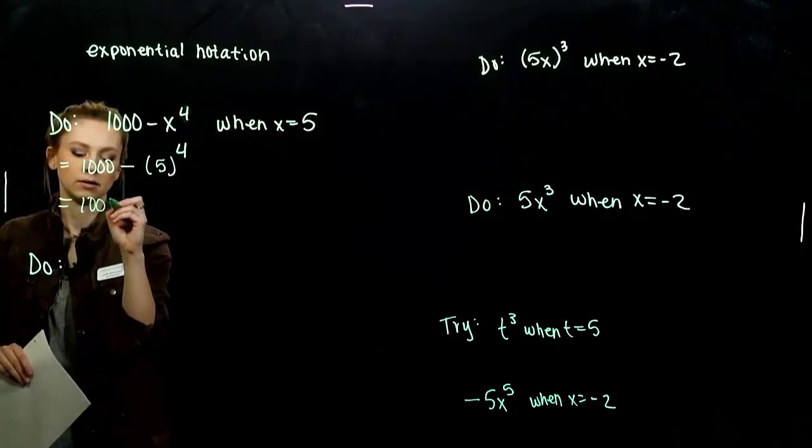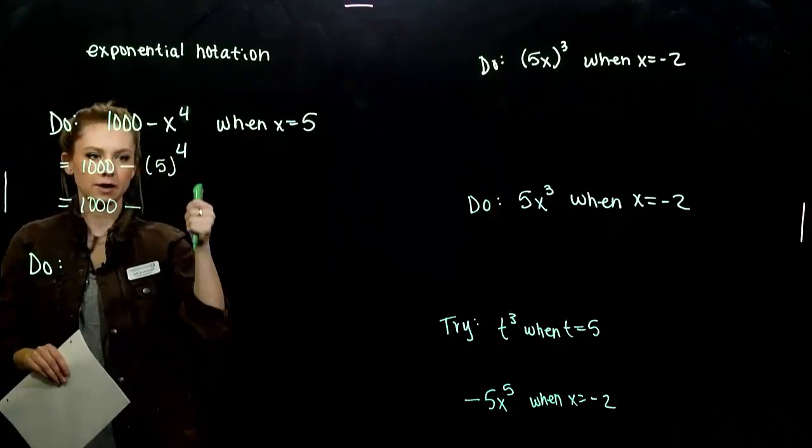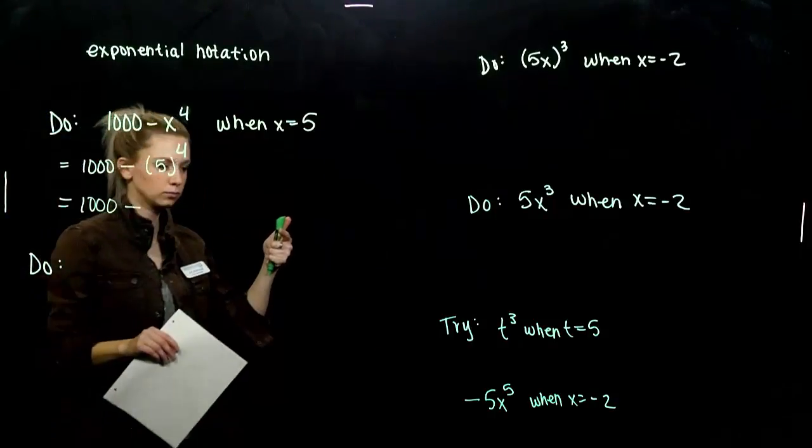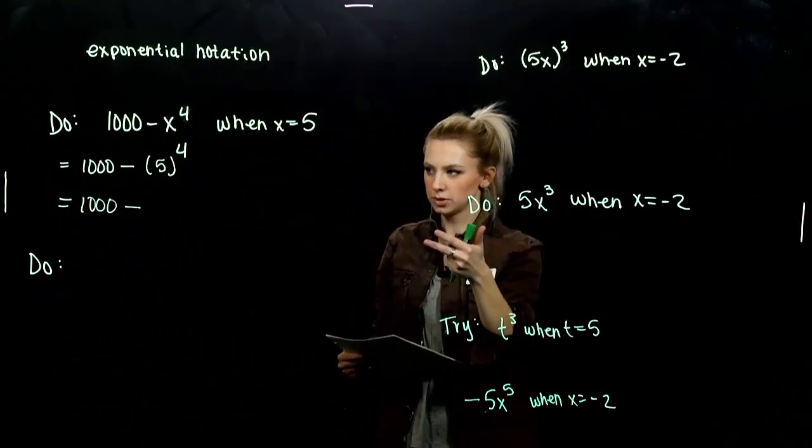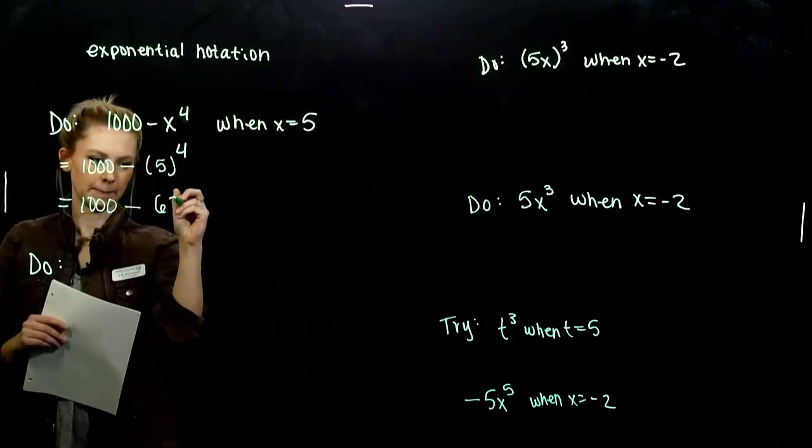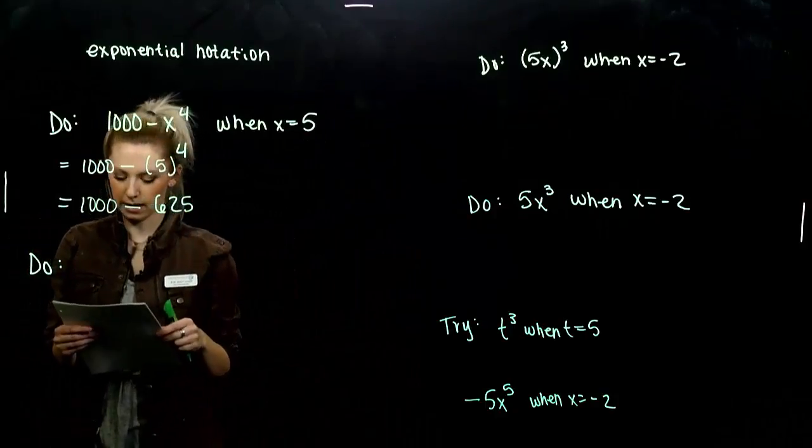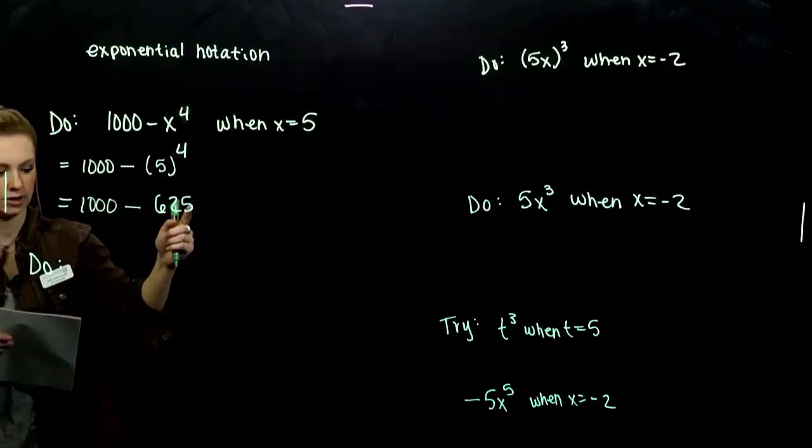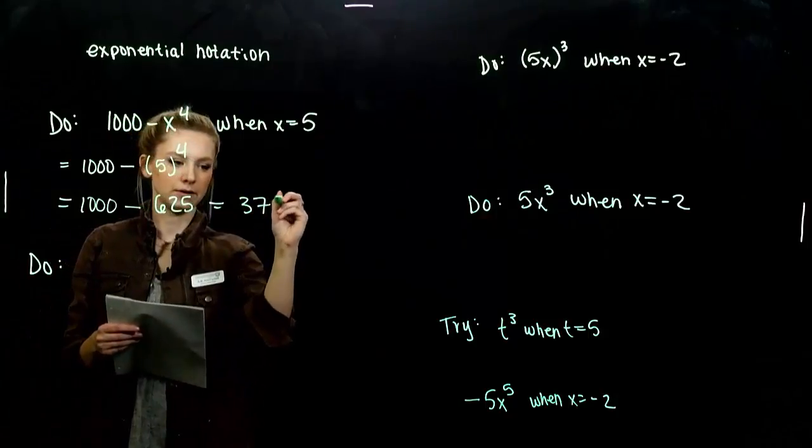What do we get out of here? 1000, and what does this mean? 5 times 5, 25, times another 5, 125, times another 5, 625. Once we get there, doing the subtraction, what are we looking at? In total, 375.